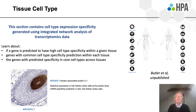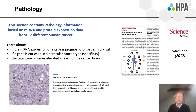The tissue cell type section is a new section for this version. It contains expression specificity information generated using network analysis of transcriptomics data, and you can learn about which genes are specific for a given tissue. The pathology section contains information based on both mRNA and protein expression from 17 different human cancers, providing among other things a catalogue of genes elevated in each cancer type.